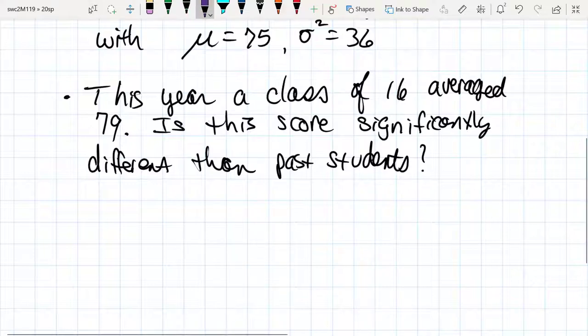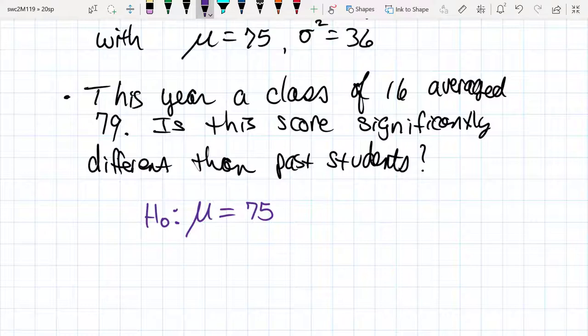The test that we're going to look at states that the mean for students, the expected mean in fact, is 75. So this is the null hypothesis, that the mean is 75 and that's what's expected.